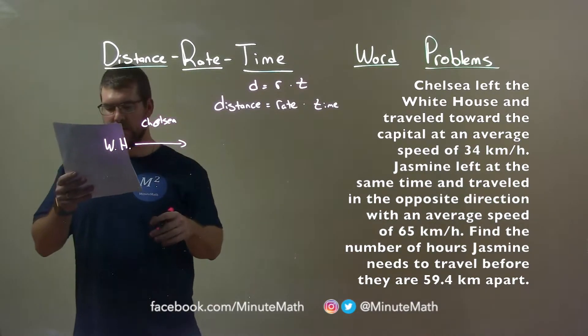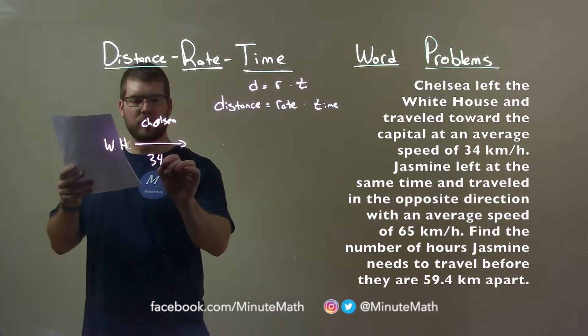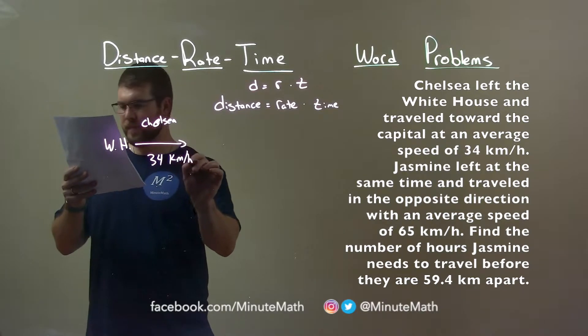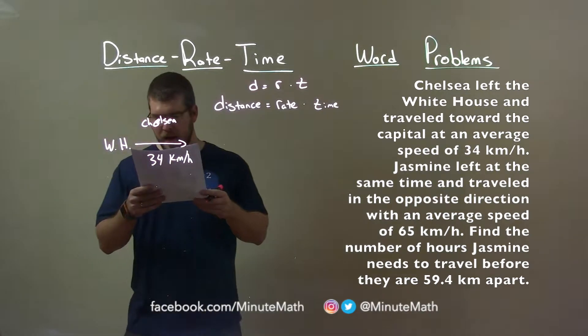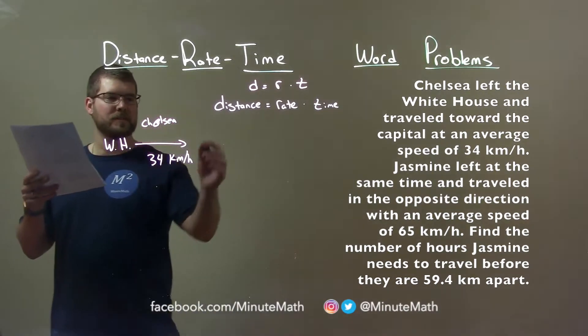A little space here, unnecessary. She's traveling 34 km per hour. At the same time, Jasmine left in the opposite direction. So here's our capital.